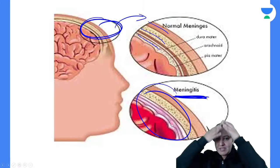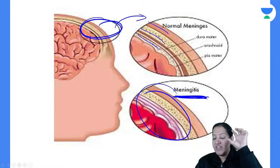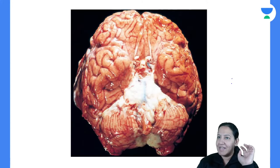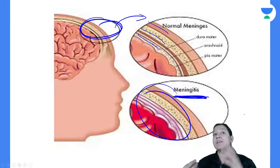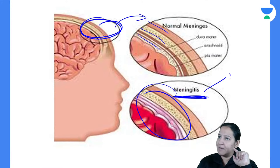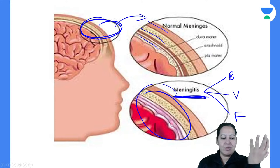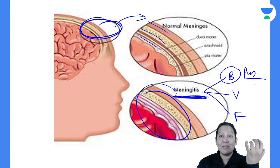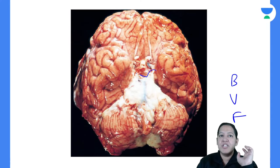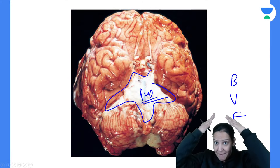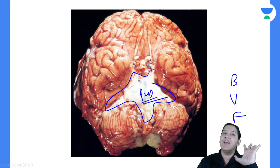Looking at an image of bacterial meningitis, you can appreciate white-colored pus in the meninges — this is what bacterial meningitis looks like grossly. Meningitis can be caused by bacteria (bacterial meningitis), viruses (viral meningitis), or fungi (fungal meningitis). Bacterial meningitis is pyogenic — pus is formed. Viral and fungal meningitis do not form pus.